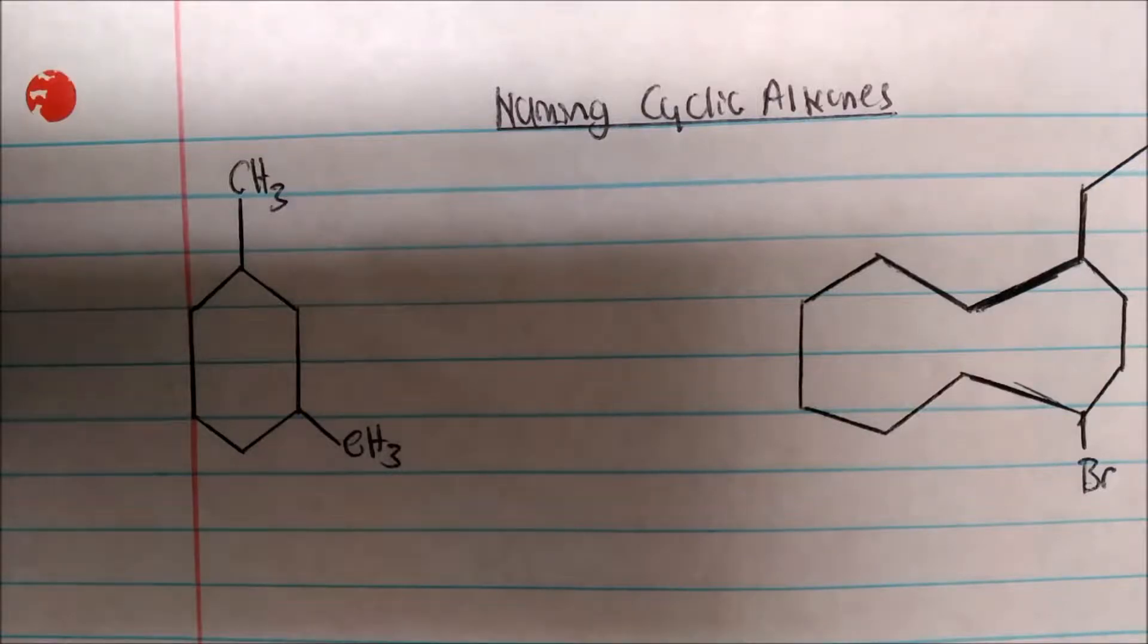So naming cyclic molecules, or cycloalkanes. Nothing much more different than just regular alkanes. The only thing that changes is that your parent now will be cyclo. So it's cyclo whatever the longest chain is. So let's go through some examples.